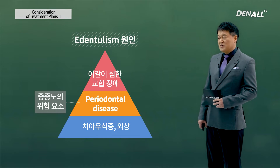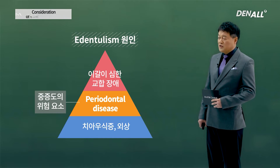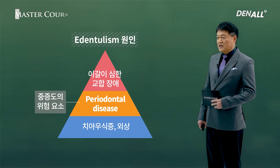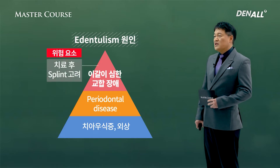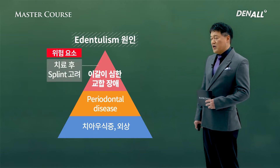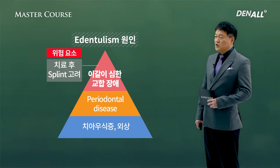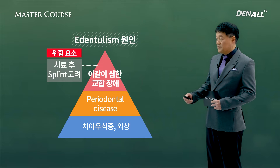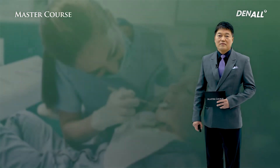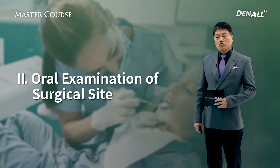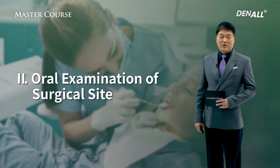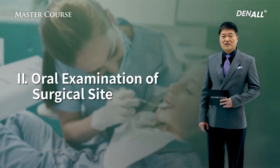For patients with periodontal disease, regular checkup is required. When patients grind teeth or have malocclusion after treatment, splints can be considered. After general oral examination, check the surgical site.